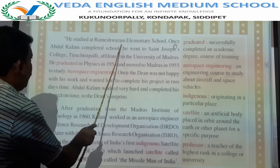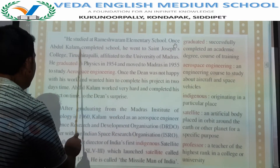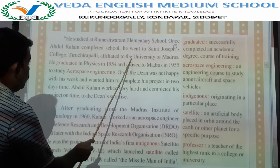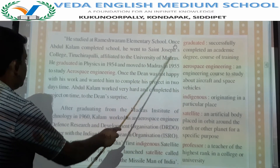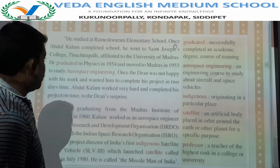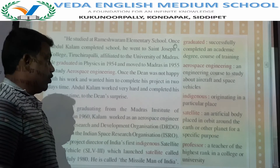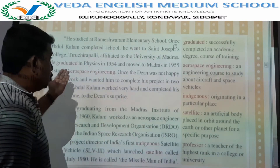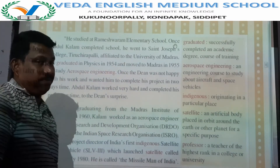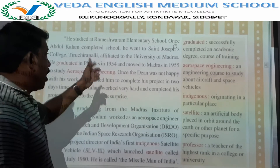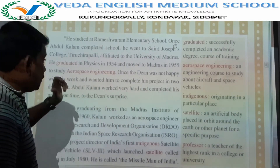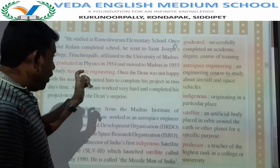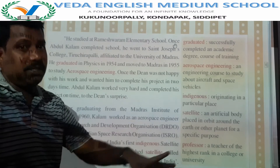He studied at Rameshwaram Elementary School. Once Abdul Kalam completed school, he went to St. Joseph's College, Tiruchirappalli, affiliated to the University of Madras. He completed his graduation in physics in 1954. After that, he moved to Madras in 1955 to study aerospace engineering.